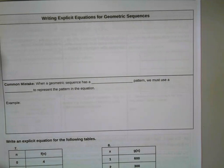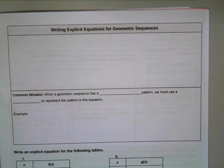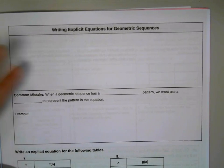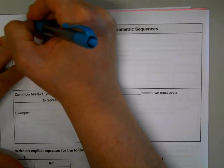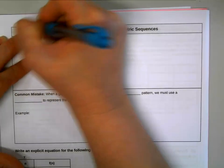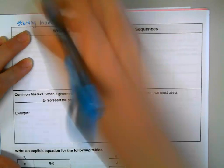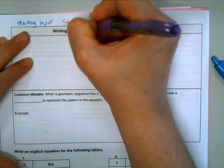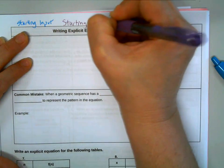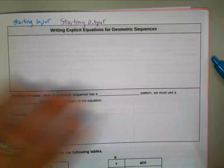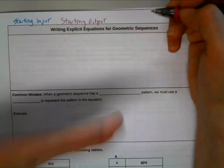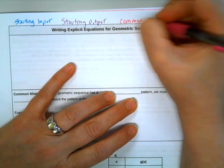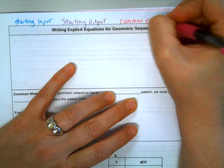Just like before when we were doing arithmetic sequences, we always need three numbers before we can write the equation. We need our starting input, we need our starting output, and of course our pattern - in this case it would be our common ratio because we're doing geometric sequences.